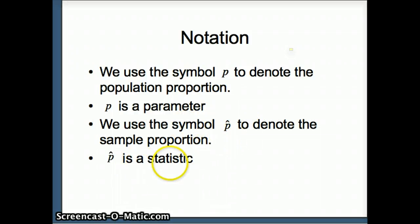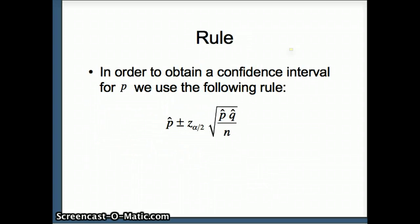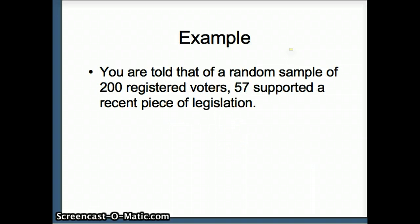p-hat is a statistic; it represents a characteristic of some sample. And if we want to obtain a confidence interval for p, we use this rule: p-hat plus or minus z alpha by 2 times the square root of p-hat q-hat. q-hat is of course just 1 minus p-hat, divided by n.